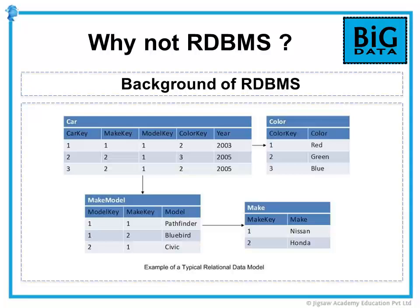A relational database is essentially a group of tables. Tables are made up of columns and rows. Those tables have constraints on what data can be entered, and relationships are defined between them. Relational databases are queried using SQL, and result sets are produced from queries that access data from one or more tables. Multiple tables being accessed in a single query are joined together, typically by a criterion defined in the table relationship columns. Normalization is a data structuring model used with relational databases that ensures data consistency and removes data duplication.